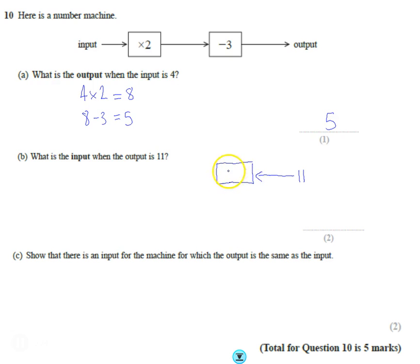So the first thing we're going to do is we're going to do the opposite direction, so we're doing the opposite operation. We're going to add 3, then we're going to come to here. Instead of multiplying by 2, we're doing the opposite or the inverse. We're going to divide by 2, and then we're going to come out with our input here.